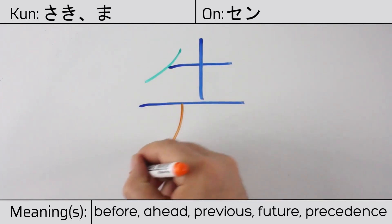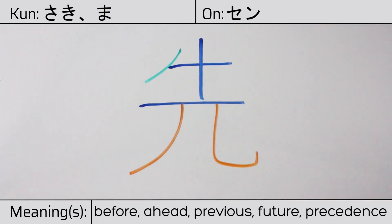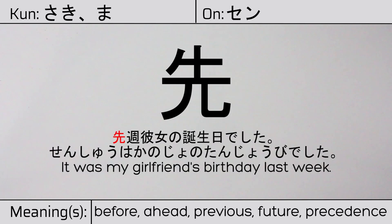You can remember this kanji by the following hint: the cow is a high-ranking animal in certain traditions, where the human legs radical originally meant 'high.' Our example sentence is: 先週、彼女の誕生日でした — It was my girlfriend's birthday last week.